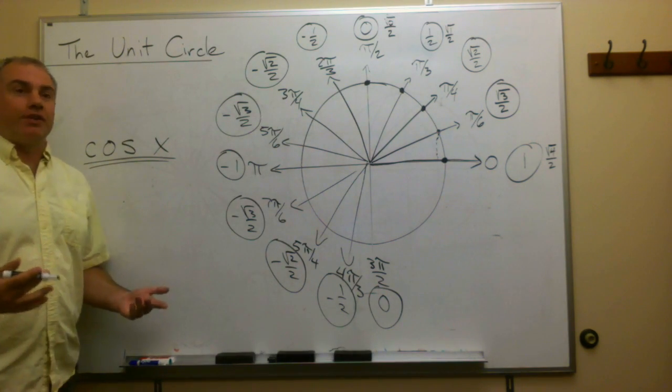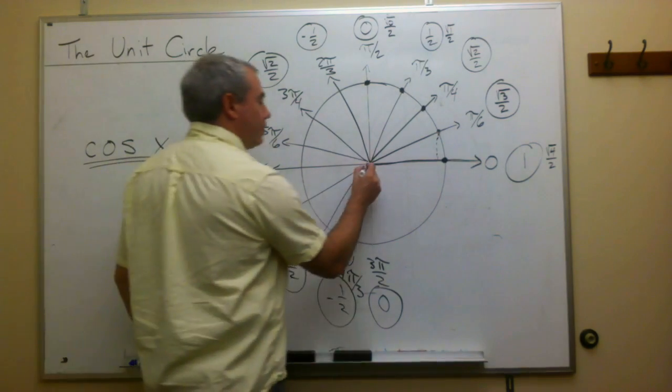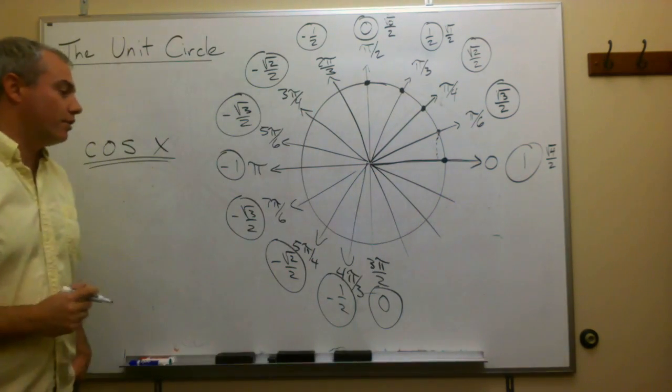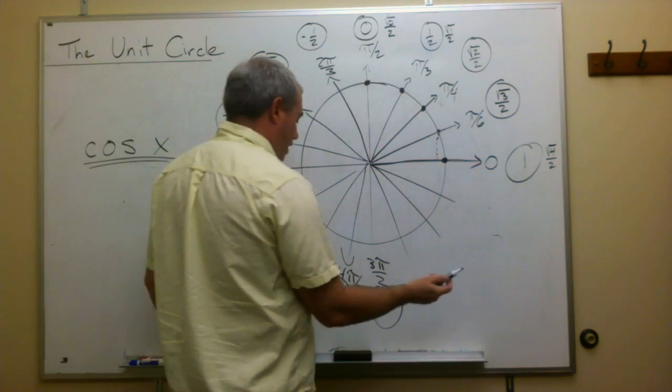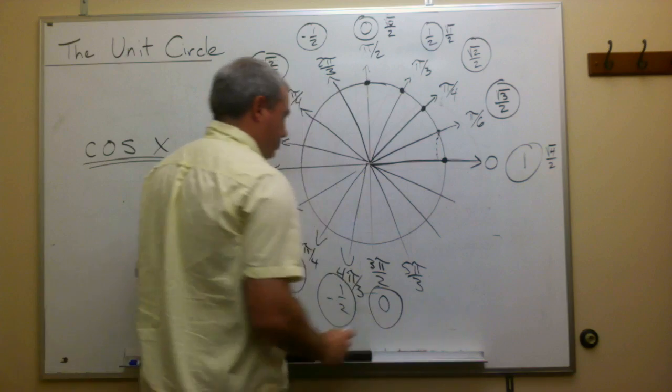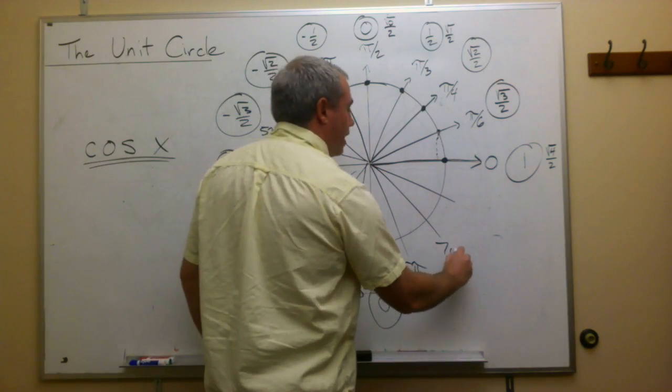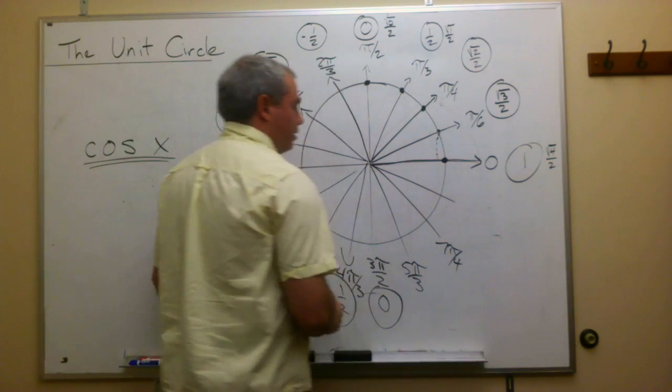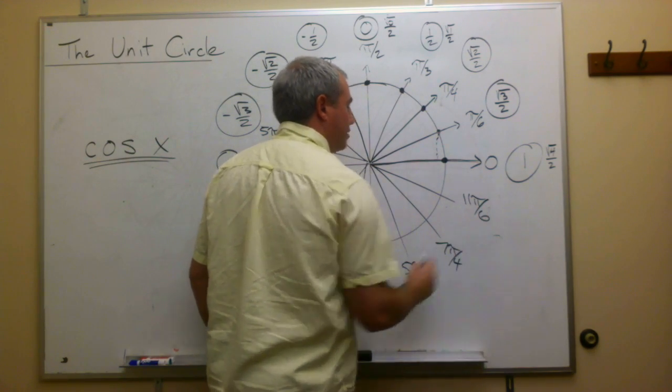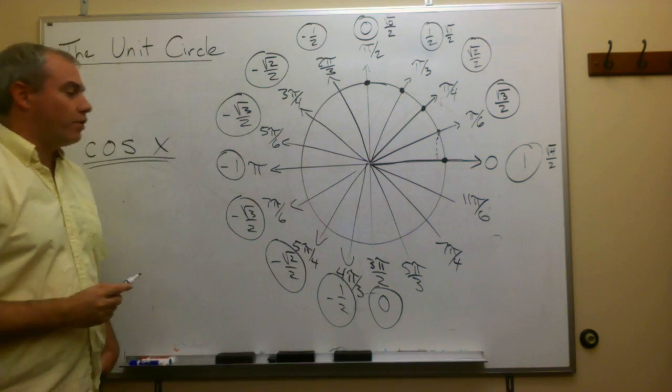I think we can fill in the rest. We need to know the angles. So here are the three important angles on this side of the unit circle. We have 5 pi over 3. This would be 7 pi over 4. 11 pi over 6.